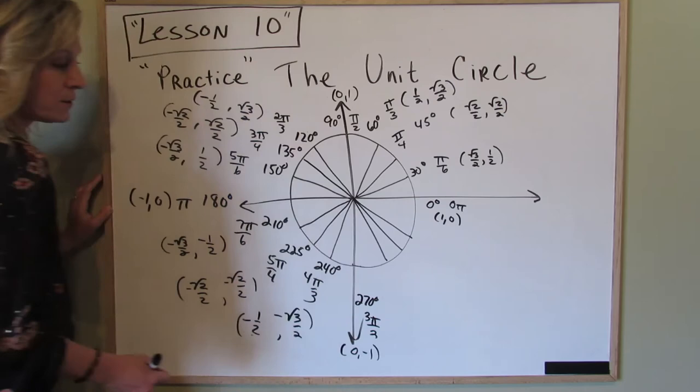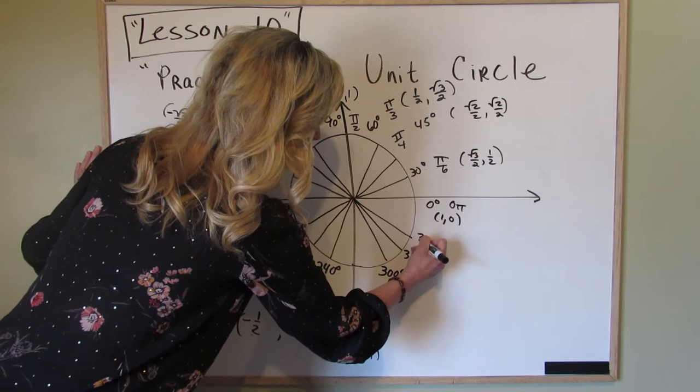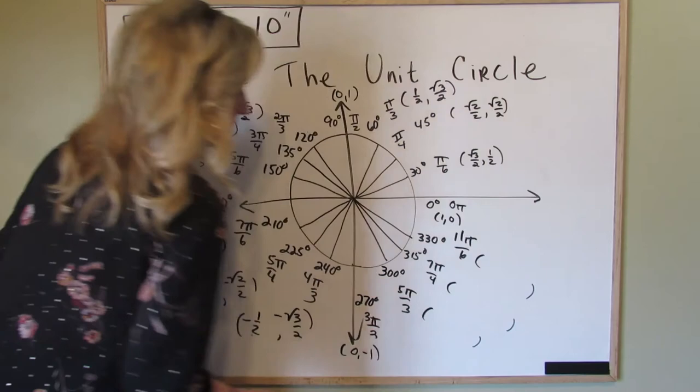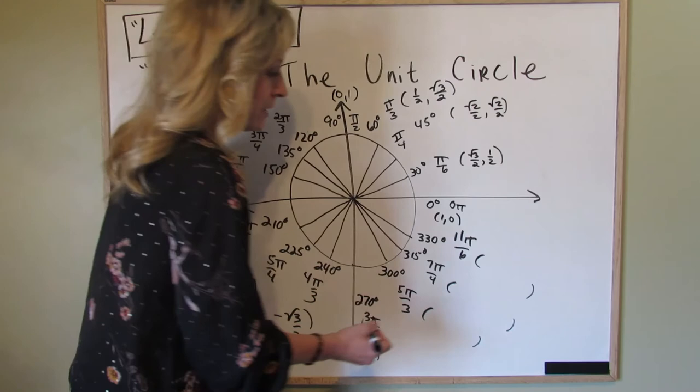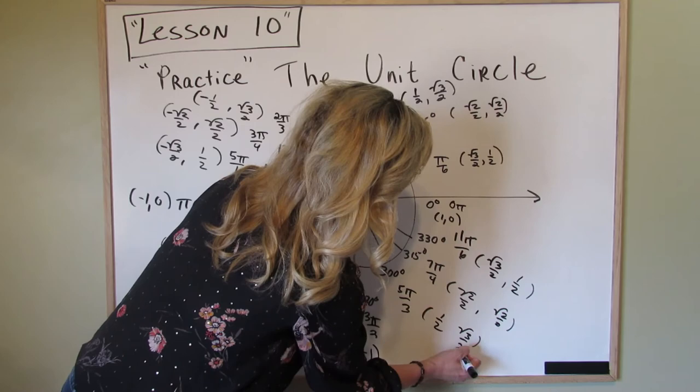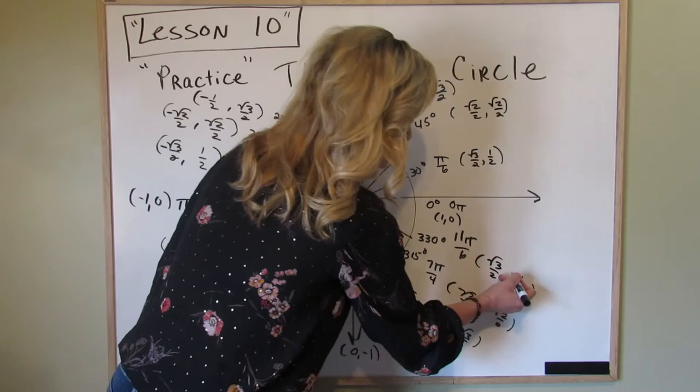Coming around the circle I have 300, 315, and 330 for my degrees. This is 5 pi over 3, 7 pi over 4, 11 pi over 6. You can make them match up from quadrant 3 or from quadrant 1. Let's go quadrant 1: square root of 3 over 2, 1 half, square root of 2 over 2, square root of 2 over 2, and then 1 half, square root of 3 over 2. What's positive in quadrant 4? The cosine is, so the sine gets a negative sign.